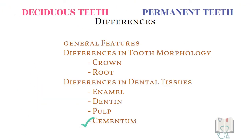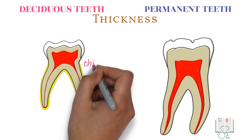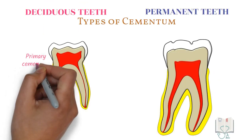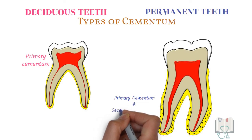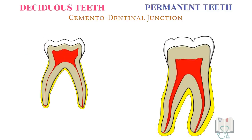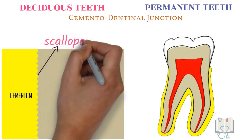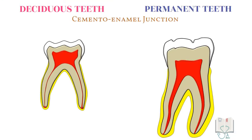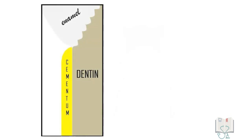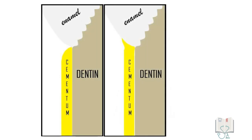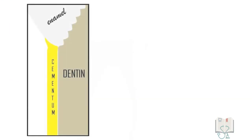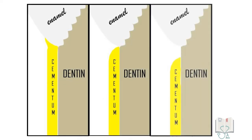Finally, differences in cementum. In deciduous teeth, the cementum is thinner than that in permanent teeth. In deciduous teeth, only primary cementum is present, whereas in permanent teeth both primary and secondary cementum are present. In deciduous teeth, the cemento-dentinal junction may be scalloped whereas in permanent teeth it is always straight or flat. In deciduous teeth, the most common type of cemento-enamel junction is the edge-to-edge type, followed by the overlap type, and then the gap type, whereas in permanent teeth the most common type is the overlap type, followed by edge-to-edge, and then the gap type.